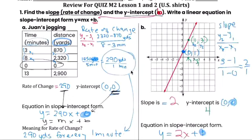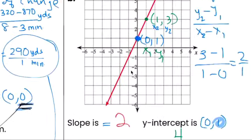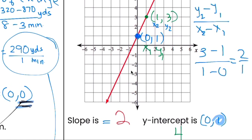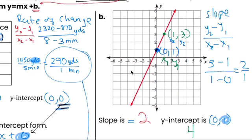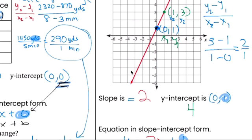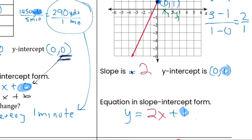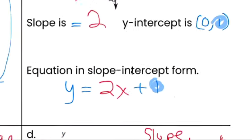Same thing here for b. Here's the slope. Finding the slope, it's 2 over 1 or 2. The y-intercept is (0,1), so (0,1) here. Tomorrow's the quiz.